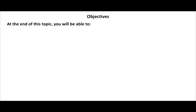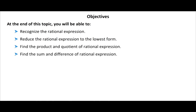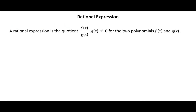At the end of the next topic you will be able to recognize a rational expression, reduce it to lowest form, find the product and quotient of rational expressions, and find the sum and difference of rational expressions. A rational expression is the quotient F(x) divided by G(x), where G(x) is not equal to 0, for two polynomials F(x) and G(x).